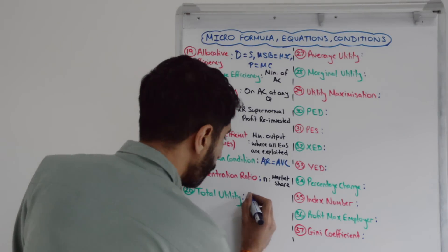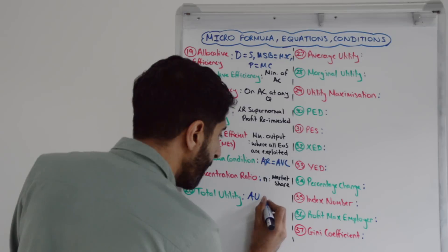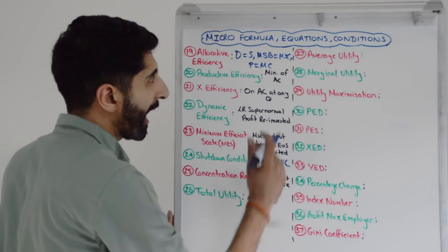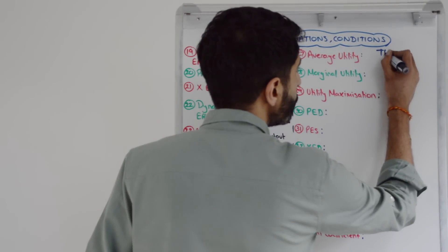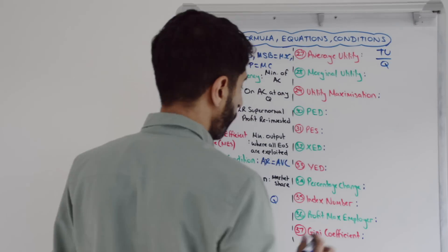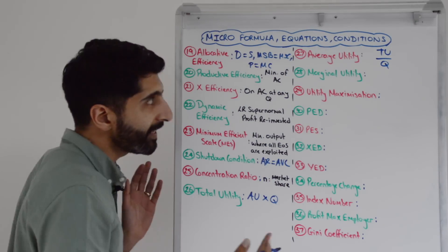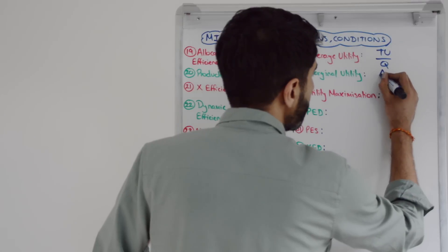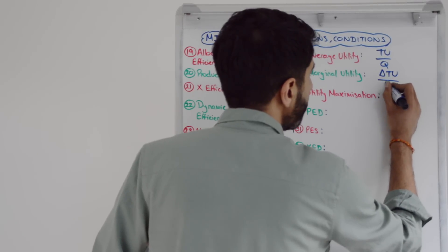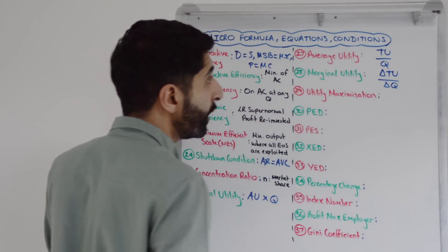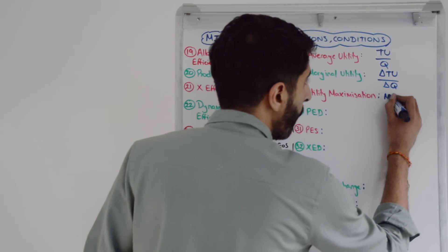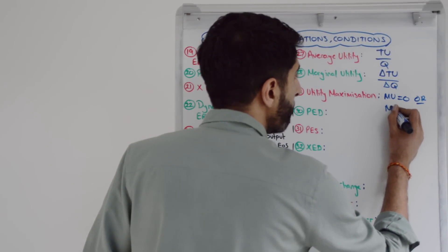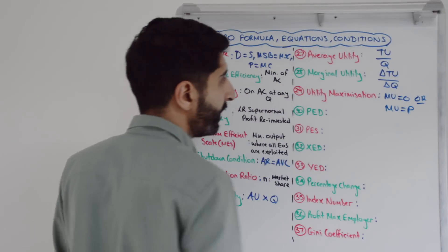To work out total utility, this is just average utility multiplied by quantity. Average utility is total utility divided by quantity. Marginal utility uses the same trick as always — the average equation with changes in it — so the change in total utility divided by the change in quantity. Utility is maximized when marginal utility is zero, or if there is a price, when marginal utility is equal to that price.